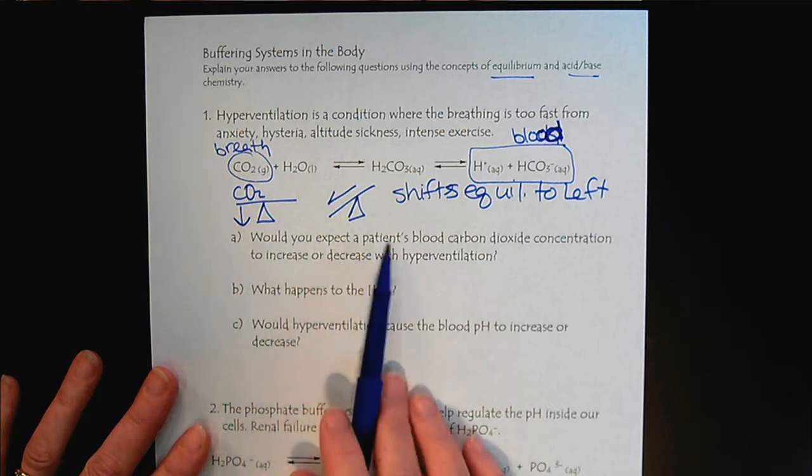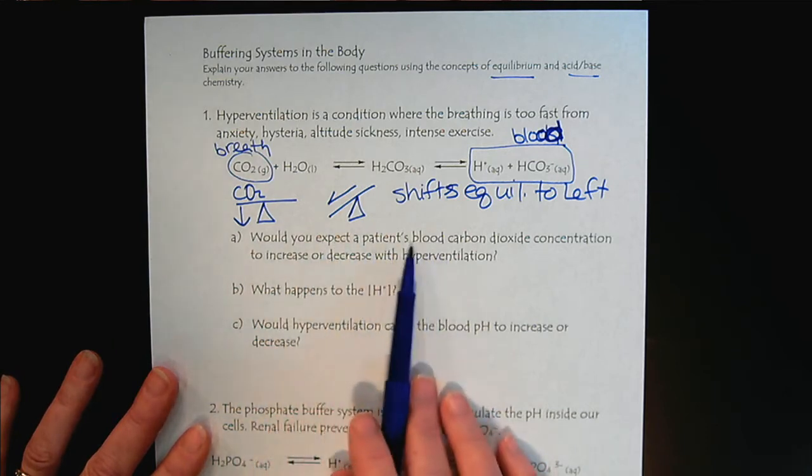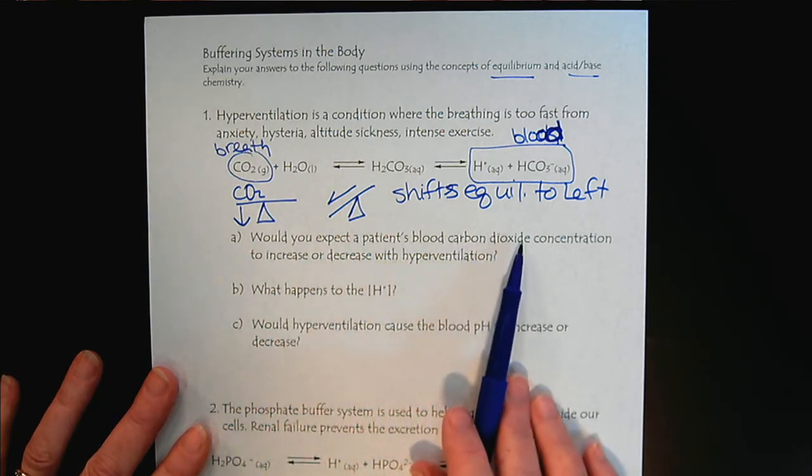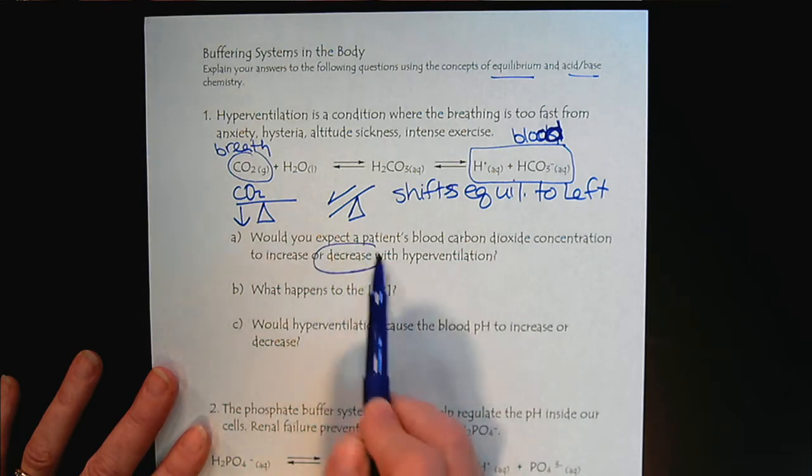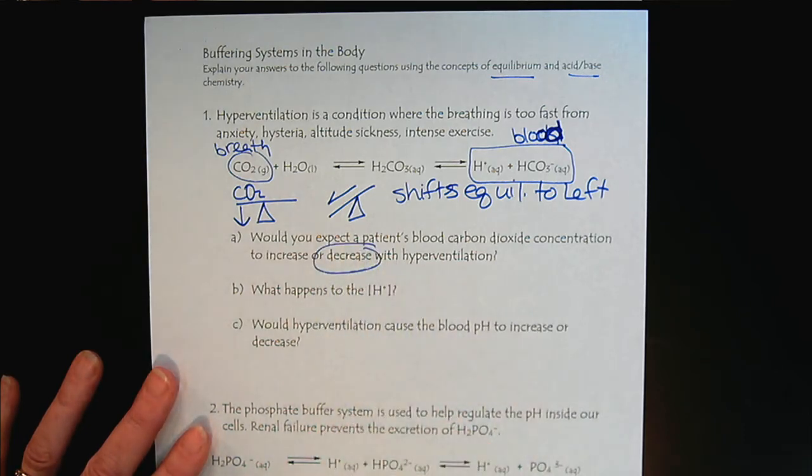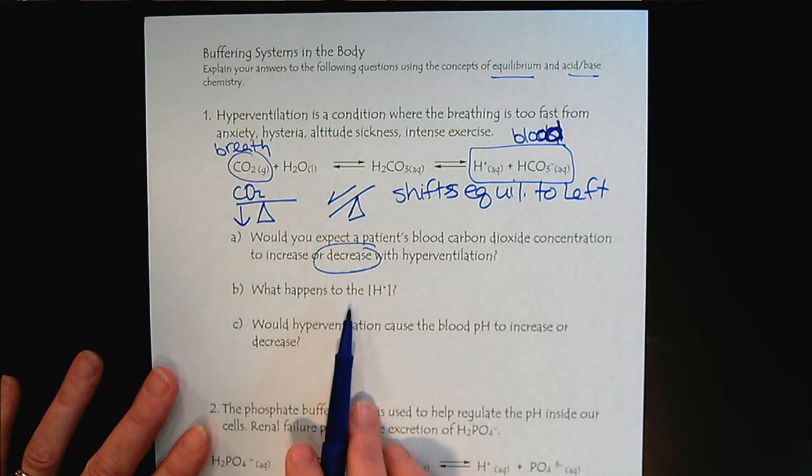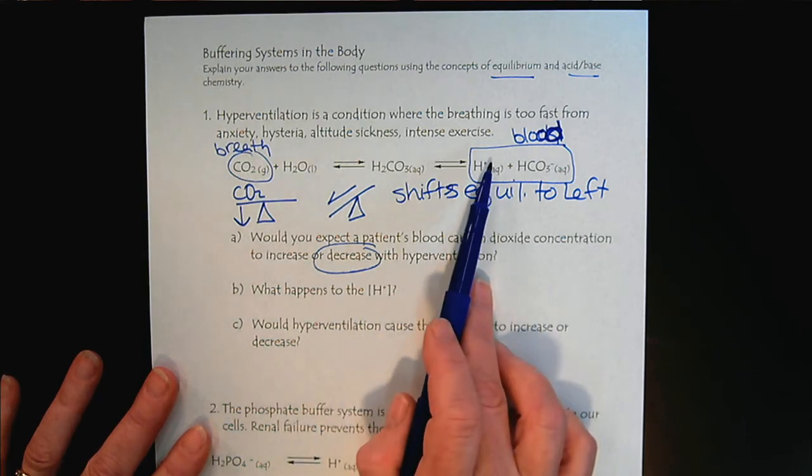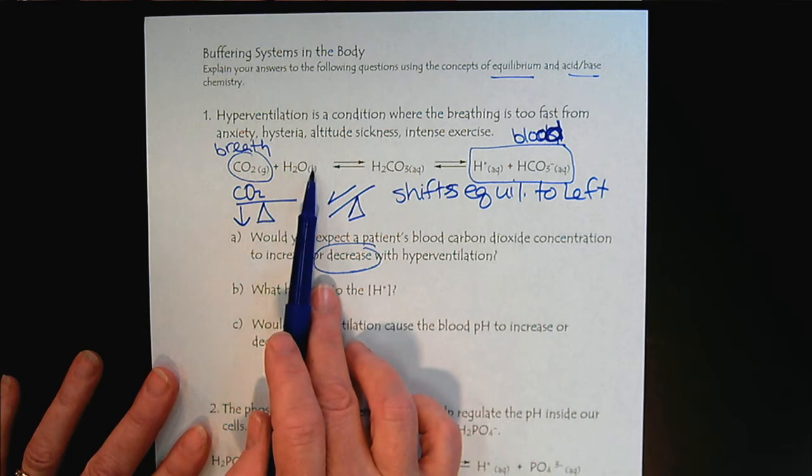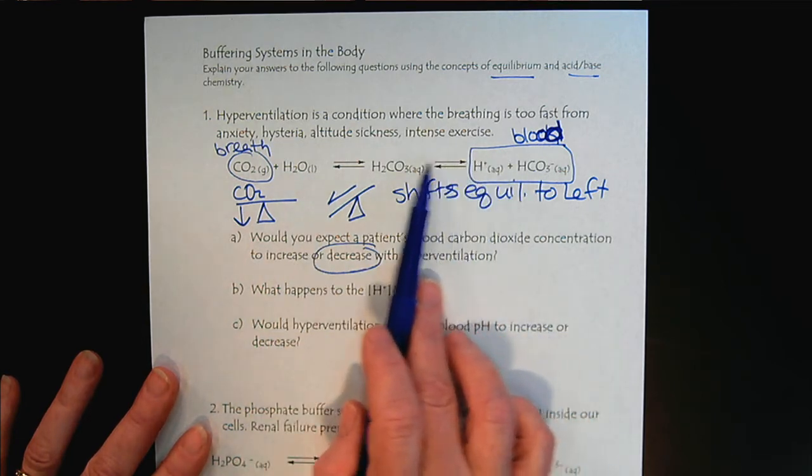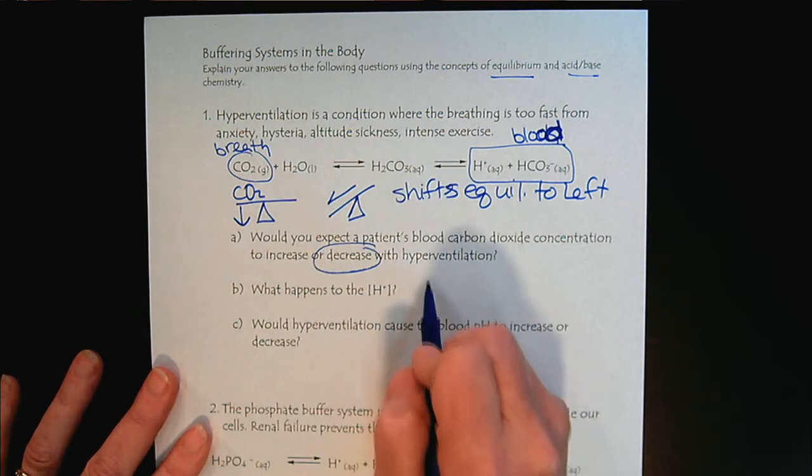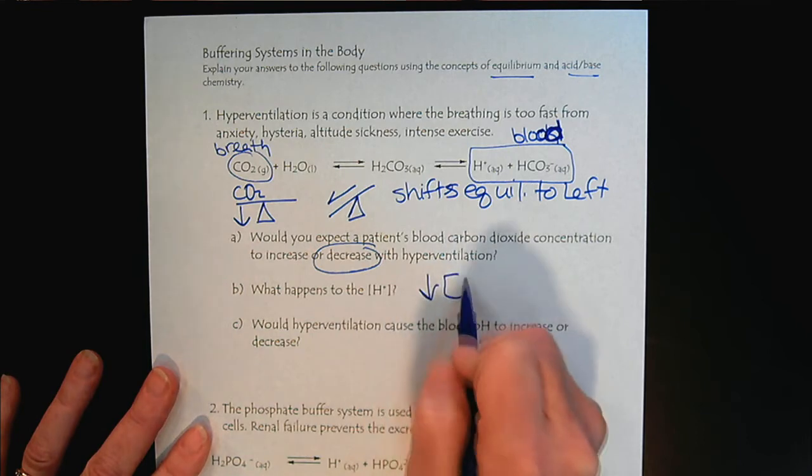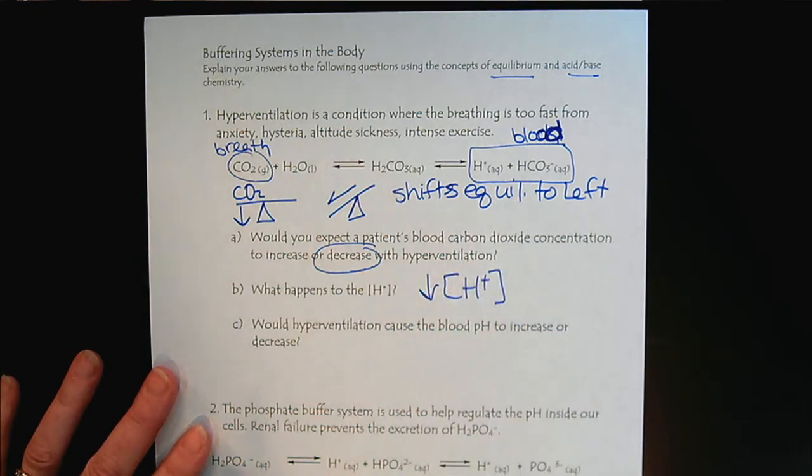We would expect the patient's blood CO2 concentration to decrease because of our rapid breath rate. What happens to the hydrogen ion concentration? Well, if we've shifted the equilibrium to the left, the body's pulling out the hydrogen ions, so we would have a decrease in the hydrogen ion concentration.